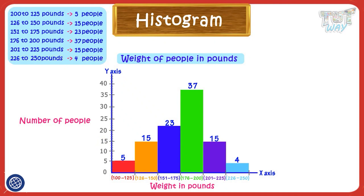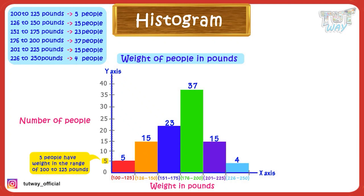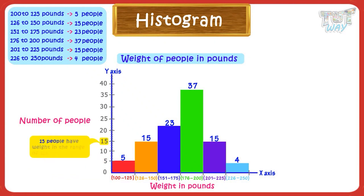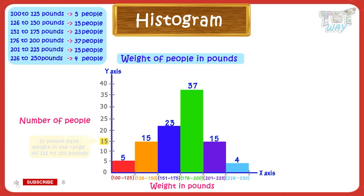And our histogram is ready. We can read our histogram like: there are 5 people in the range of 100 to 125 pounds, there are 15 people in the range of 126 to 150 pounds, and so on.